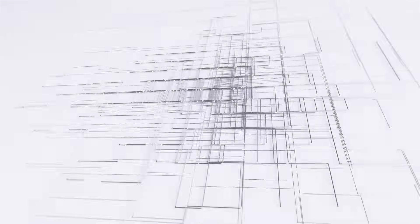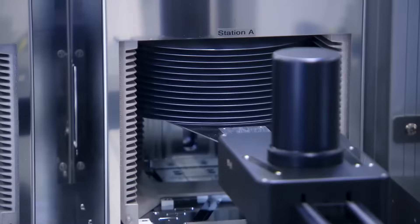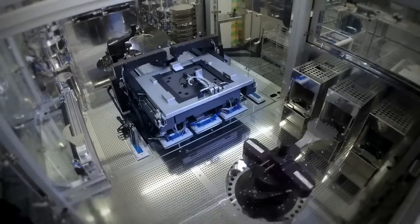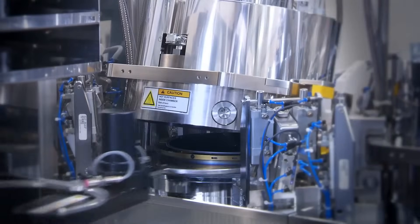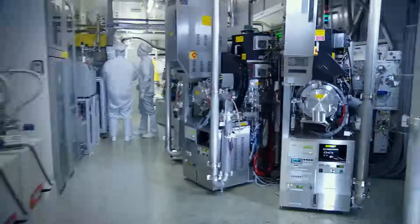Dopants are then implanted in the material to increase the electrical connectivity of parts of the semiconductor. In subsequent phases, this and other process steps are repeated until the entire layout of the chip has been deposited on the wafer.